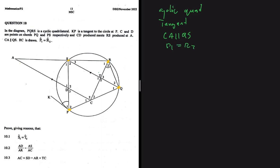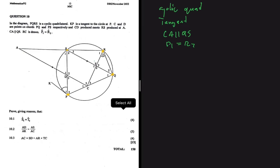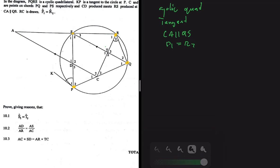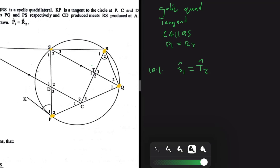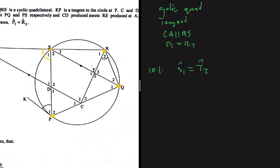What I've been proposing is that with only these four keywords — cyclic quad, tangent, parallel lines, and P1=R2 — we should be able to answer all the questions. So let's go ahead and try. Question 10.1 asks us to prove, with reasons, that S1 equals T2. Let's look at S1 — S1 is an exterior angle of a cyclic quad, so we're using our first keyword.